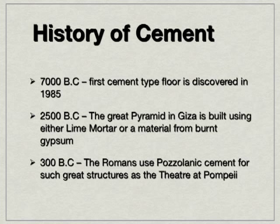Fast forward now to 2500 BC when the building of the Great Pyramids took place. Here a cement-like material was actually used to bond the stone together. Some claim this was a lime mortar while others claim it was burnt gypsum. Lime mortar is essentially a lime putty which, when mixed with sand, can become a bonding agent. Burnt gypsum is essentially plaster of Paris, which has the ability to set quickly.